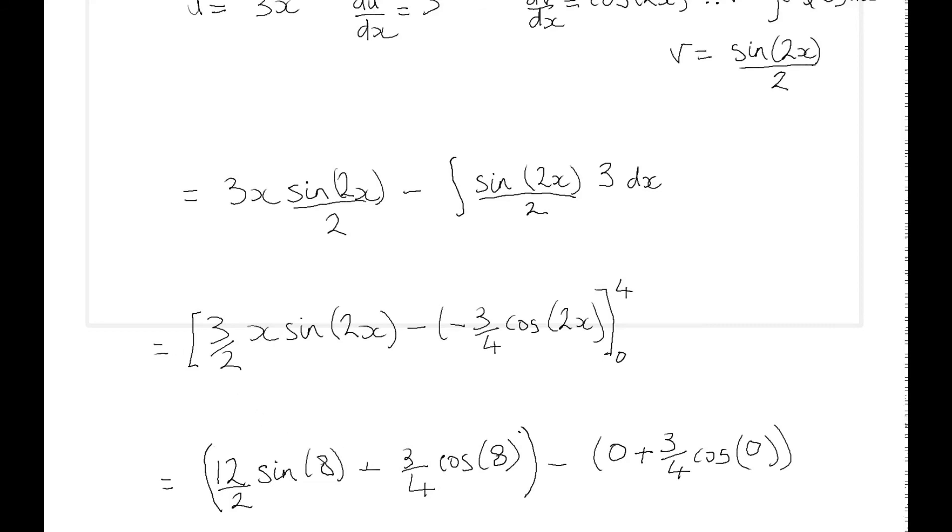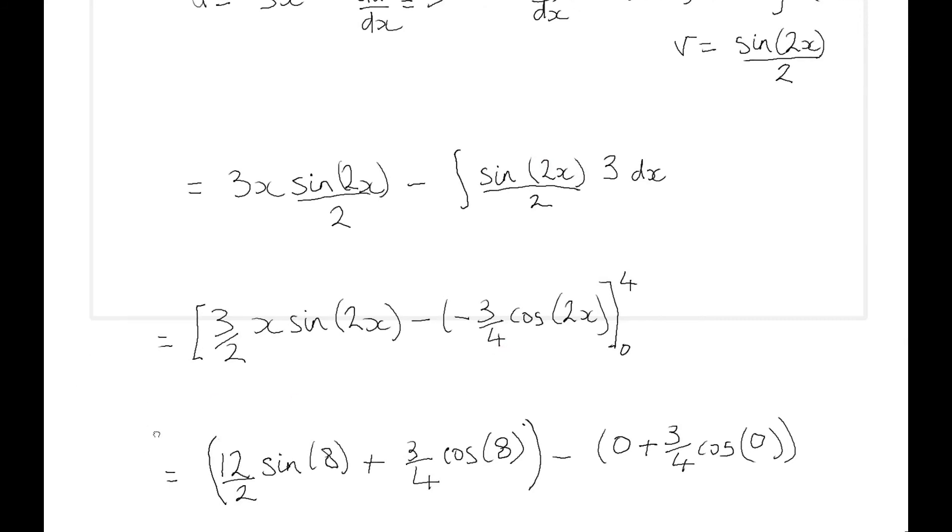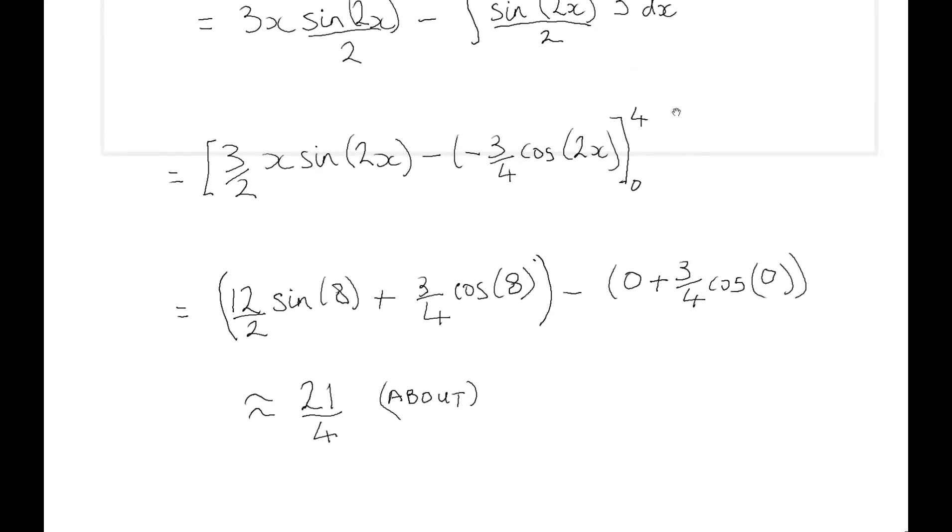I've done my integration of this part here, and that's given me this solution, so I end up with a minus and a minus. I've done the maths, the number crunching, done the integration. Taking this three to the front, the two has come out and dropped to the bottom, so I've multiplied the two into that. That's why I've got three quarters.